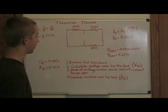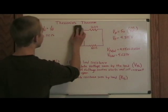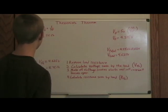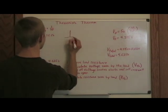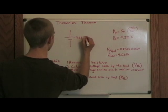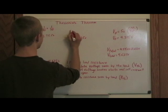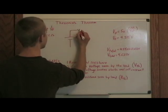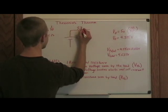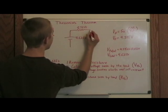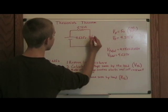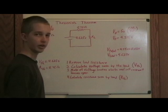Now all that's left is to write that Thevenin equivalent circuit. We have a battery, 4.625 volts, and we have a series resistor that's 8.75 ohms, and then we have that load resistor. And you're done.